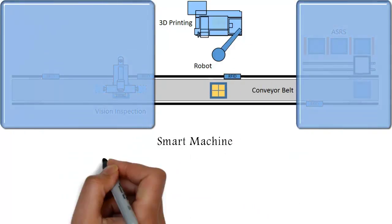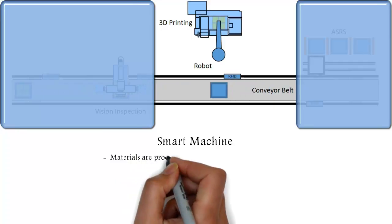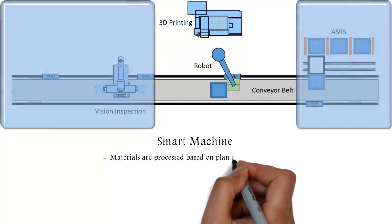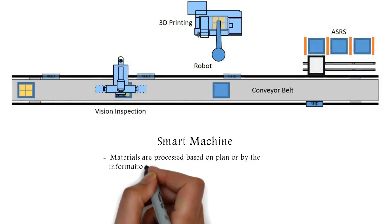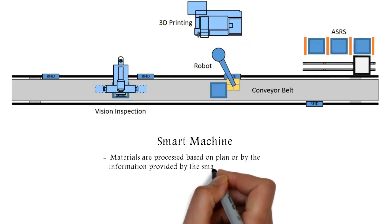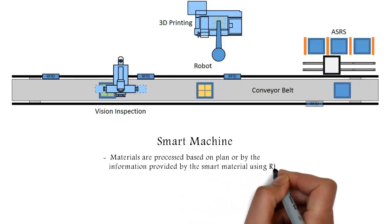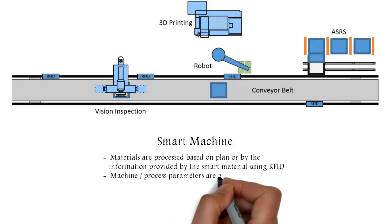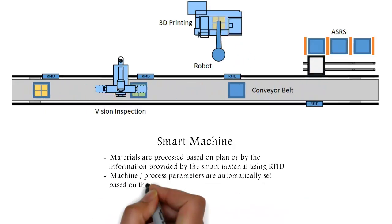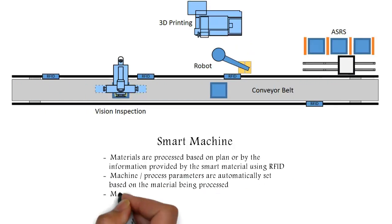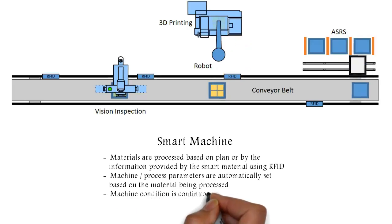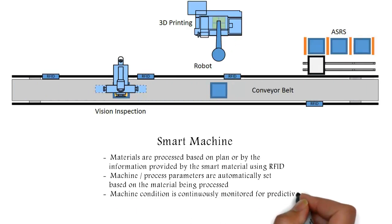Smart machine: Materials are processed based on plan or by the information provided by the smart material using RFID. Machine and process parameters are automatically set based on the material being processed. Machine condition is continuously monitored for predictive maintenance and to achieve high availability.